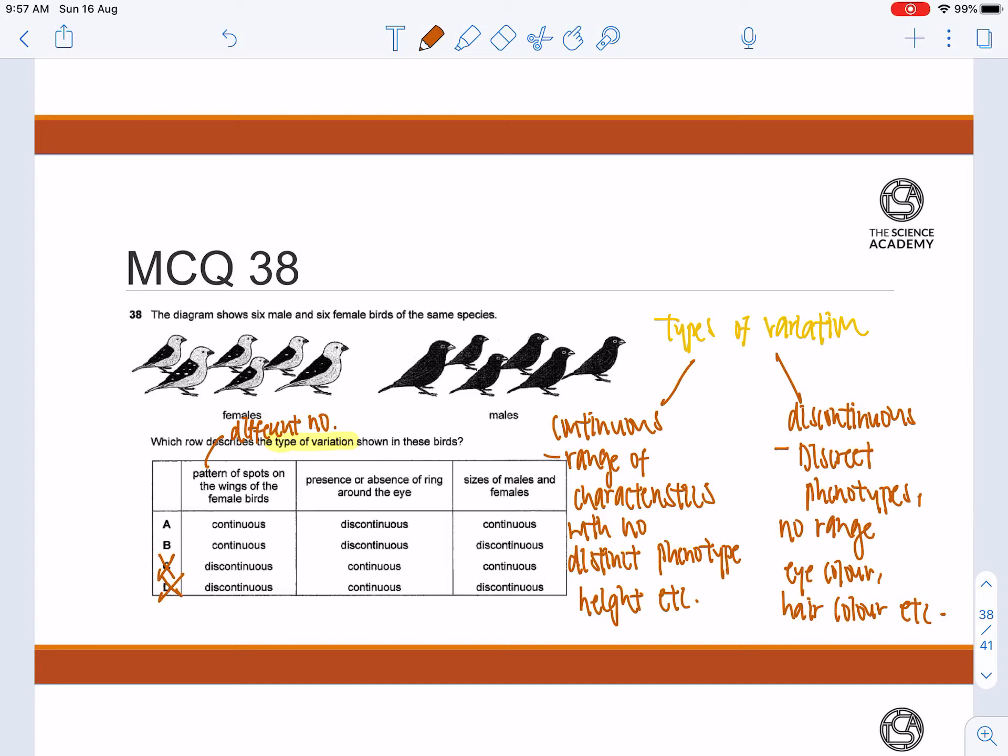And the last category, size of males and females is continuous. Why is it continuous? It's because size can vary. The males may be super large, the females may be very small to small to medium and things like that. As a result of it, size is a continuous variation.